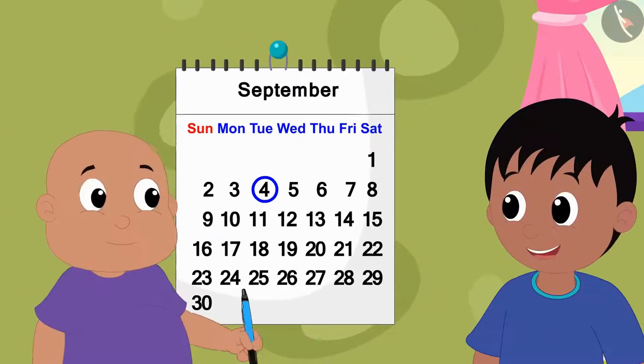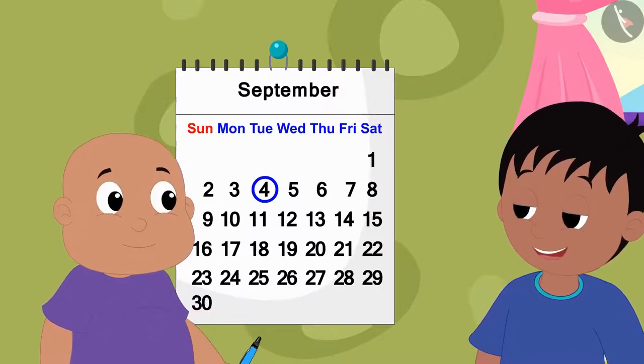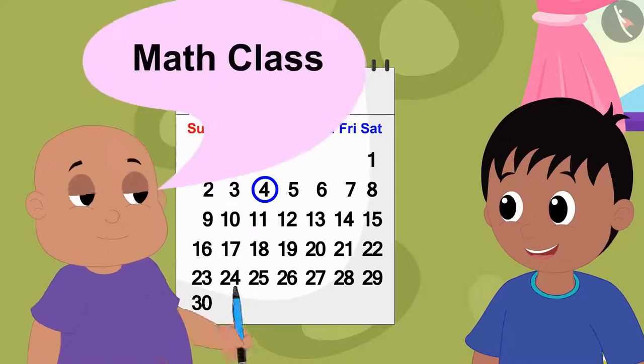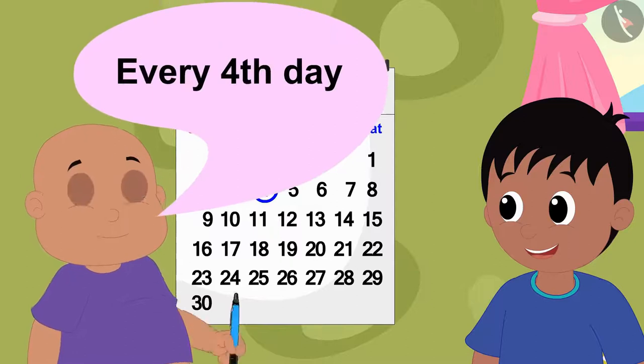When Raju asks him what he is doing, Bablu tells him that he has enrolled in a math class and his class will be every fourth day.